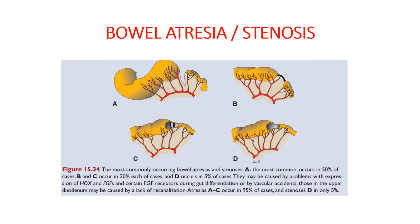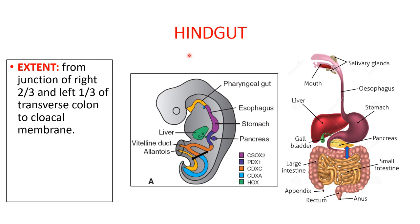The last midgut anomaly is gut atresia or stenosis — atresias are complete obstructions and stenoses are abnormal narrowing. These can occur anywhere along the intestines, but the most common site is the duodenum, with very few cases in the colon. In the upper duodenum, the most probable cause is lack of recanalization; other causes include vascular accidents.